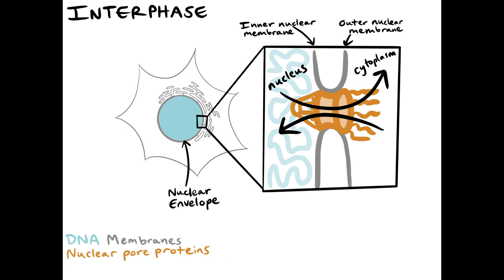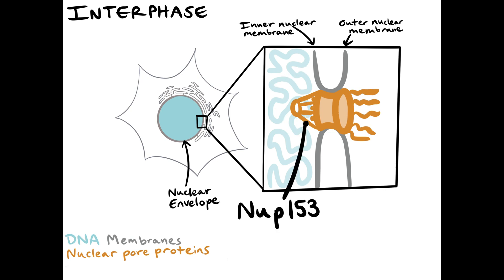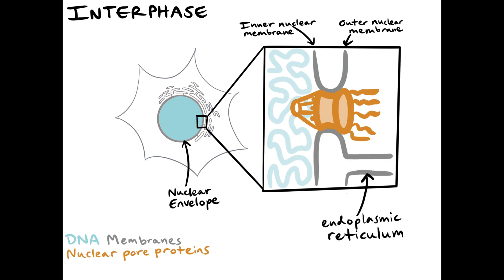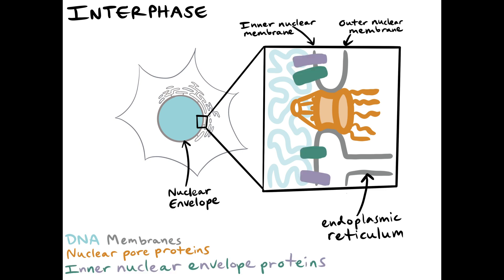NUP-153 is one of three protein constituents of the nucleoplasmic substructure of the pore termed the nuclear basket. The outer nuclear membrane is connected to the endoplasmic reticulum, while the inner nuclear envelope houses a number of architectural proteins essential for nuclear function.